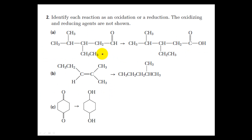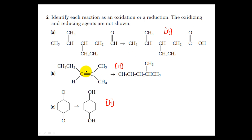Please pause the video and identify which reaction is oxidation and which is reduction. For 2a it's an oxidation reaction — originally you only had two bonds with the oxygen, now you have three, so more bonds with oxygen means oxidizing. The second is a reduction reaction — the double bond has been broken apart, giving two extra bond sites that are filled with hydrogens, so more bonds with hydrogen. The third is also a reduction reaction — originally four bonds with oxygens, now only one bond with oxygen.